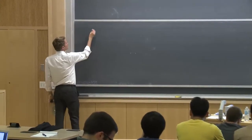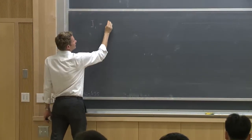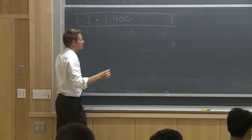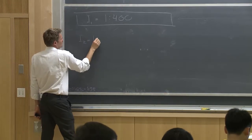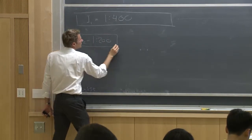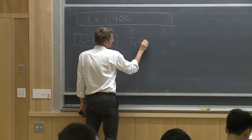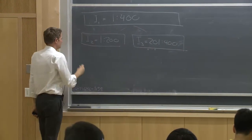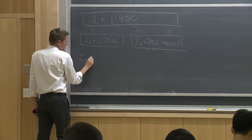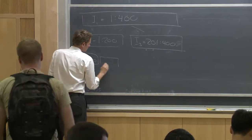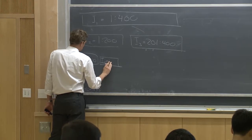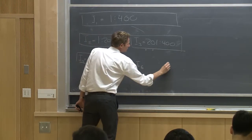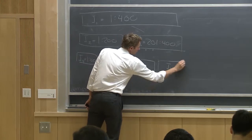I'm going to use this notation extensively. I1 is the entire index vector, in this case 1 to 400. We split this into its two children, which we label I2 and I3, and then continue down the tree.